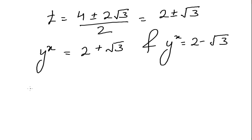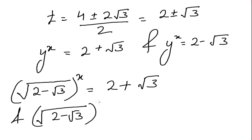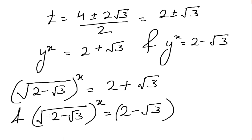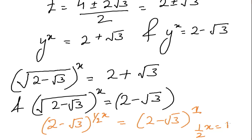Recall that y = √(2 − √3). For the case t = 2 − √3: (√(2 − √3))^x = 2 − √3, which means (2 − √3)^(x/2) = (2 − √3)^1. Since the bases are the same, the exponents must be equal, so x/2 = 1, giving x = 2.